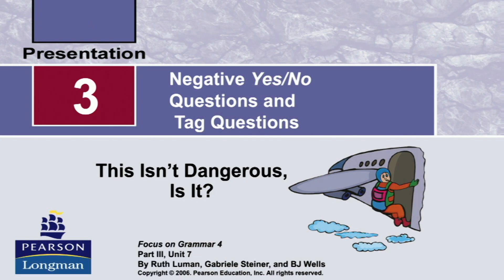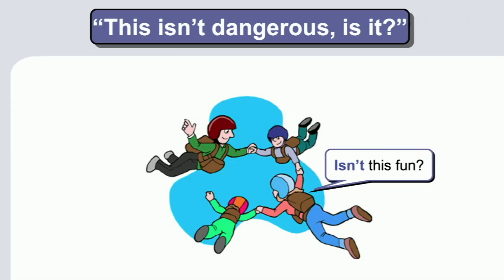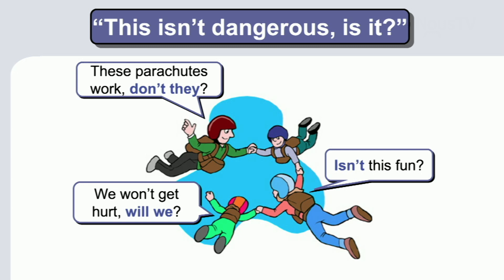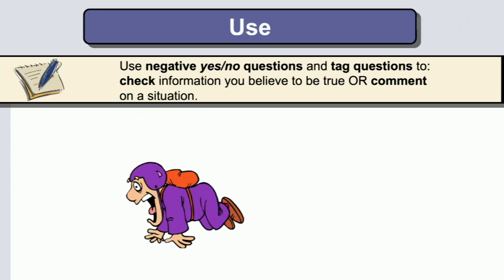So, this isn't dangerous, is it? This isn't dangerous, is it? Isn't this fun? These parachutes work, don't they? We won't get hurt, will we? You haven't done this before, have you? These are all tag questions or negative questions that follow or come at the beginning. A negative yes-no question or tag question — we use them to check information you believe is true or to comment on the situation.